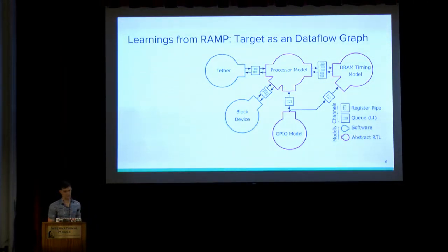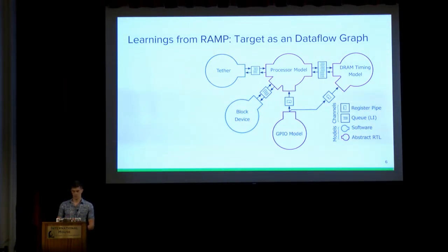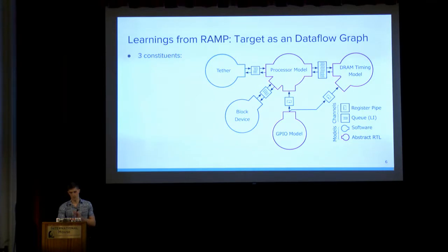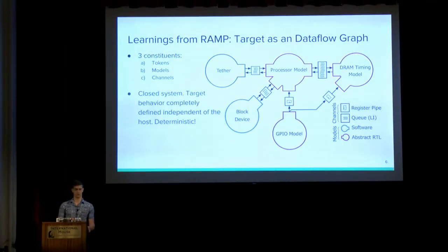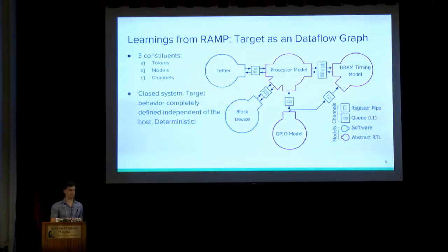A key insight from RAMP was taking the target and decoupling it from the host by describing it as a dataflow graph. These graphs have three primary constituents: tokens, which represent the values on wires at the end of a cycle — one token per cycle, these are the messages of the graph; models, which are the nodes that consume tokens and produce new output tokens, advancing simulation time; and channels, which move tokens between models. This is a completely closed system: the target behavior is defined independent of the host and behaves deterministically, so if you correctly host this graph, you can port it across different FPGAs and it will remain faithful to the target.